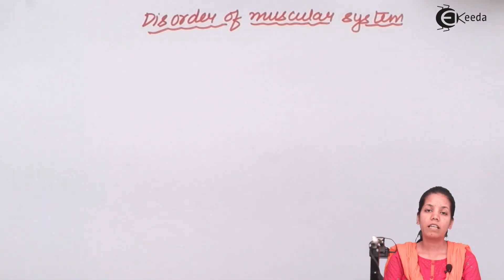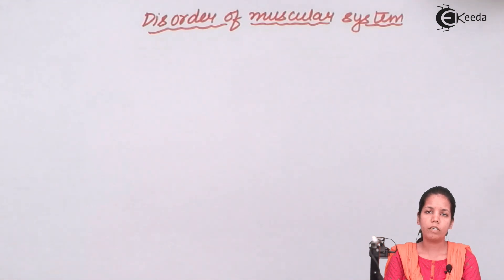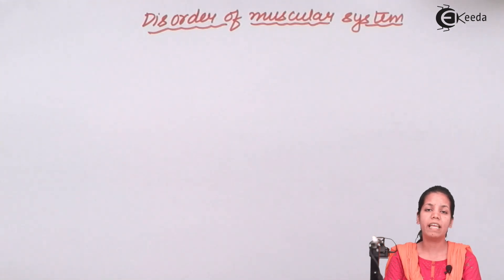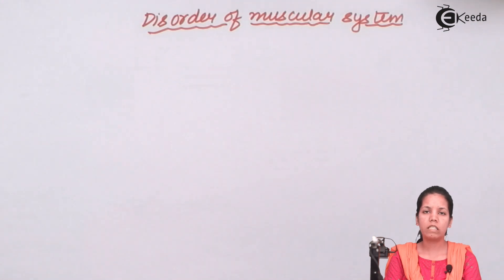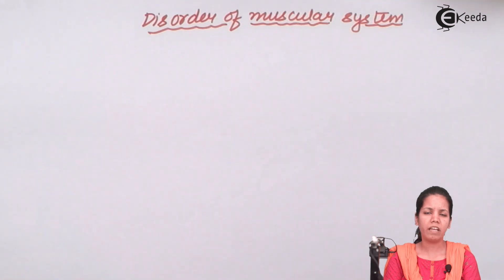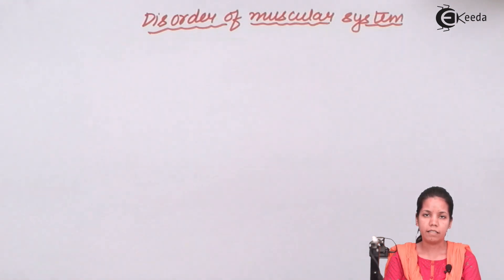Myasthenia gravis is an autoimmune disease, and this autoimmune disease has a lot to do with the ACh hormone. Its absence in the system may lead to myasthenia gravis, which has a very common symptom of blinking eyelids.